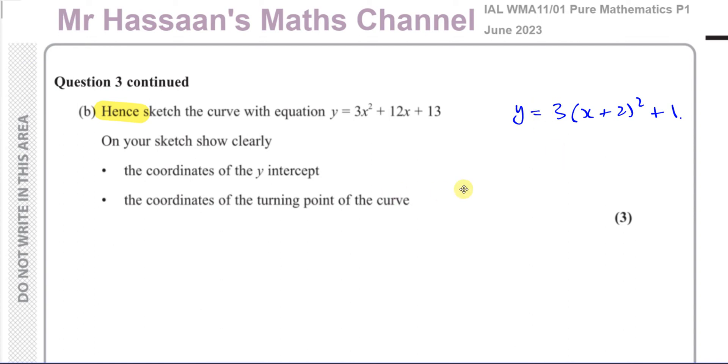Now it tells us that we only have to put the coordinates of the y-intercept and the coordinates of the turning point of the curve. That implies there are no x-intercepts, and we can kind of understand this because the turning point, the vertex of the curve, will always be given by, it's in this form.